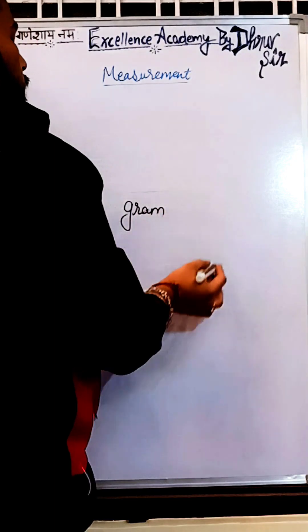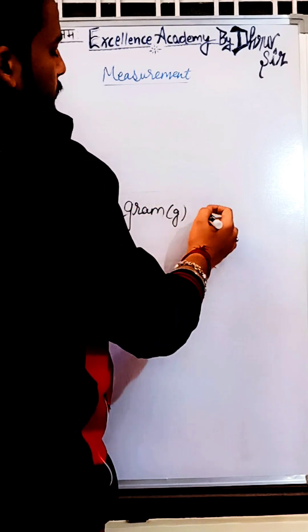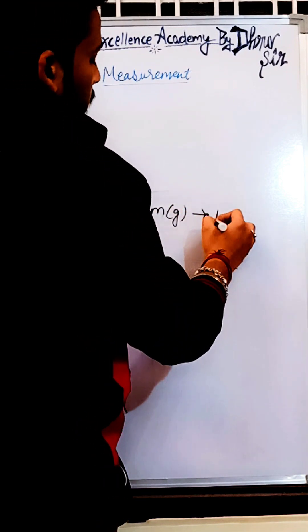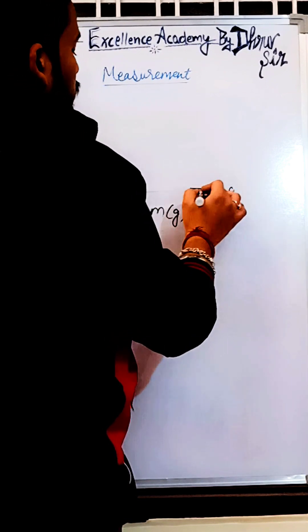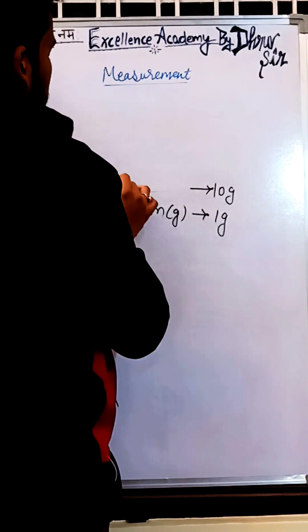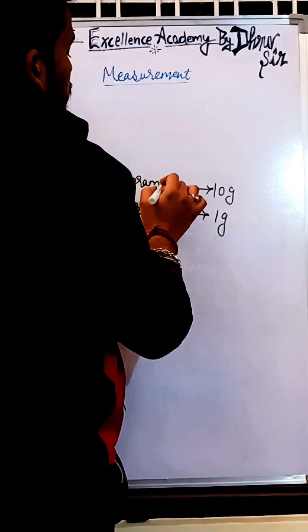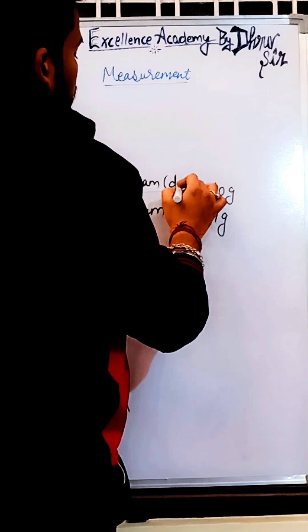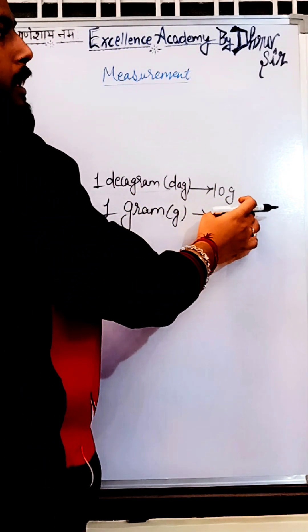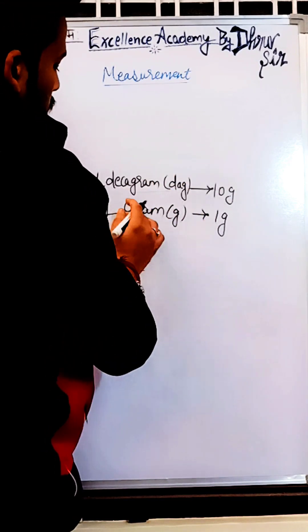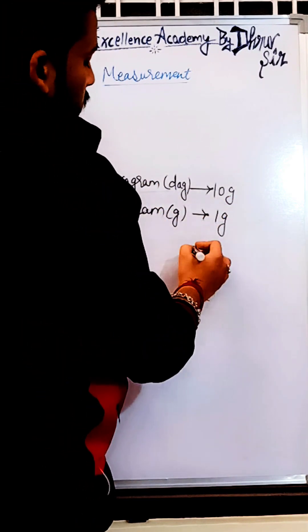If we multiply 1 gram by 10, it becomes 10 gram, and 10 gram equals 1 decagram. Short form is 'dag'. So 1 decagram equals 10 gram. Now if we divide 1 gram by 10, it becomes 1 decigram. Short form is 'dg'.